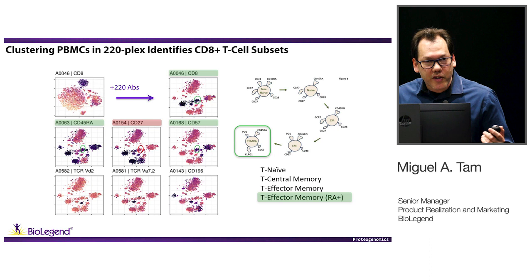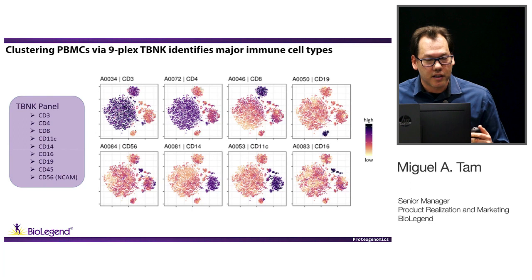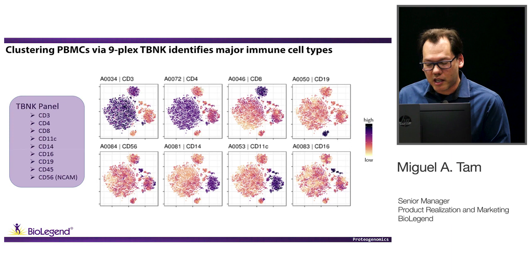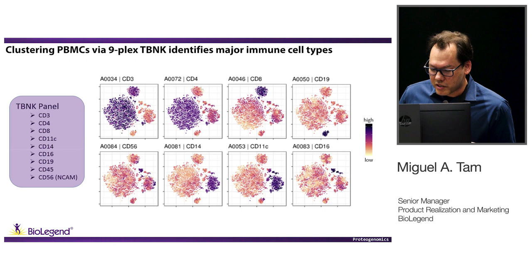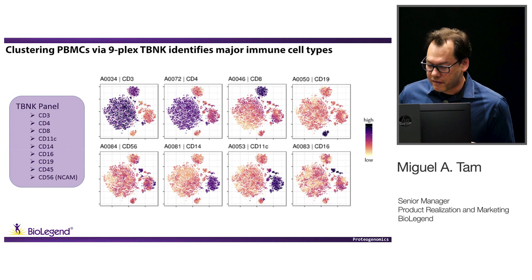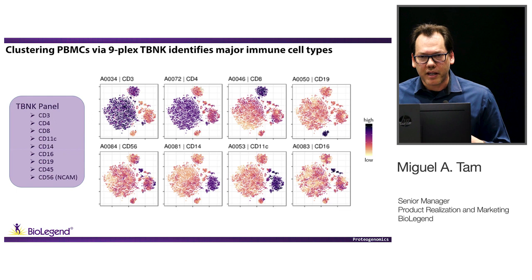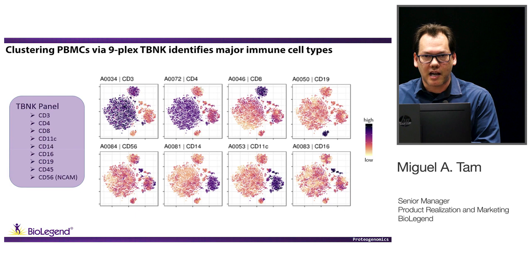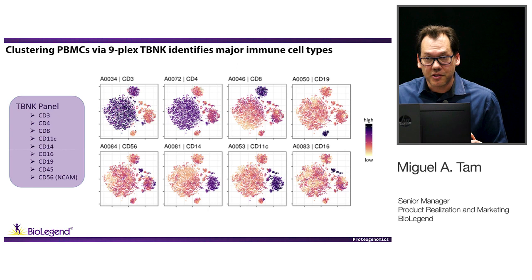We realized not everyone needs 220 antibodies, so we're working hard to make smaller panels covering more basic immune cell types — like this TBNK panel. Using this panel you can identify classical CD4 and CD8 T cells, B cells, NK cells, monocytes, and so on. We're working toward a Lego model where you can have smaller panels that you can stack on top of each other. The beauty is that individual antibodies each have a unique barcode, so you can always drop in any additional antibody you want and build on the panels we're making.